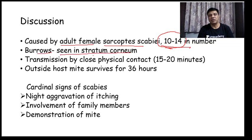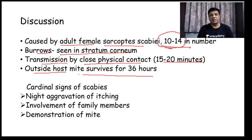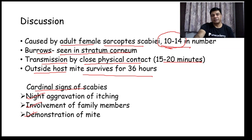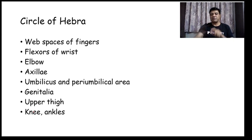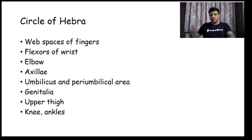The cardinal signs of scabies are: night aggravation of itching, involvement of other family members, and demonstration of mite. Scabies involves various parts of the body in a circular pattern called the circle of Hebra: web spaces of fingers, flexor of wrist, elbow, axillae, umbilical area, genitalia, upper thighs, knee, and ankle.